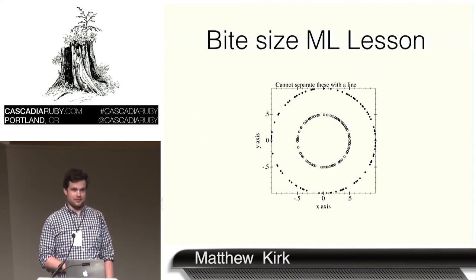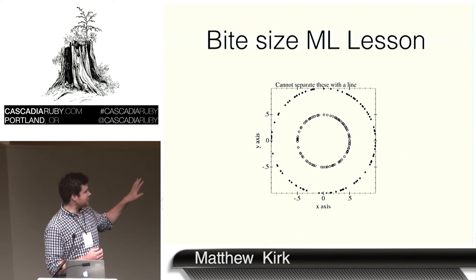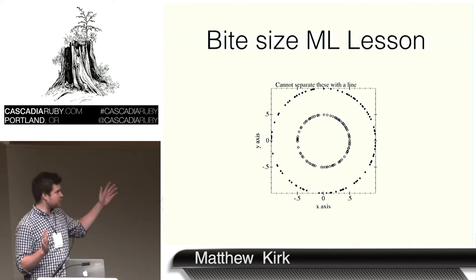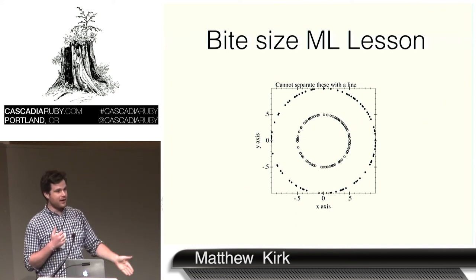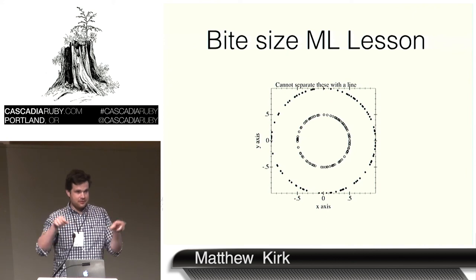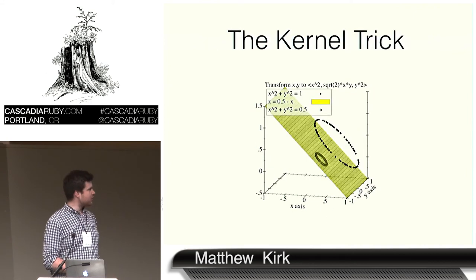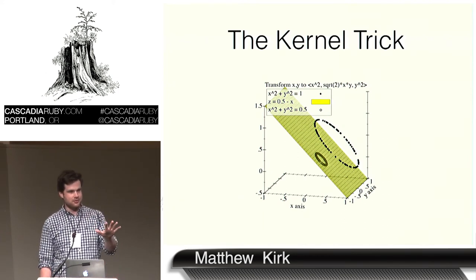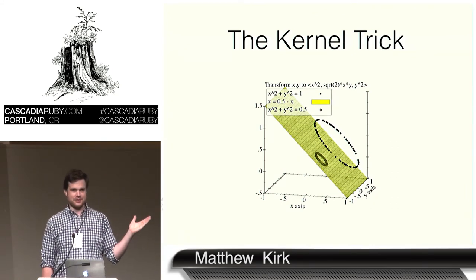Quick ML lesson: machine learning is interesting because it really helps you change your cognitive biases. When you look at two different circles, there is no way to put a line through them to make a decision boundary. But in machine learning we have this amazing trick called the kernel trick, whereby you project these two circles onto three dimensions and you are able to just put a hyperplane between them.